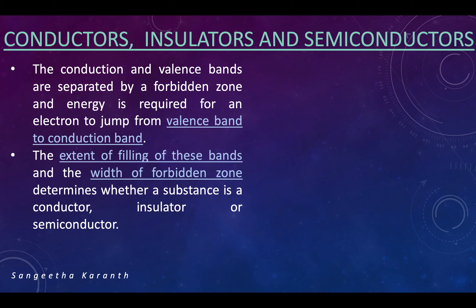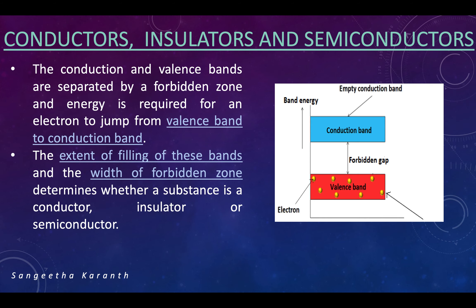Now coming on to conductors, insulators, and semiconductors. The valence band and the conduction band have something called a forbidden gap between them. This gap is the one which decides whether a particular substance will act as a conductor, an insulator, or a semiconductor. The main condition is that electrons have to move from the valence band to the conduction band for it to act as a conductor.